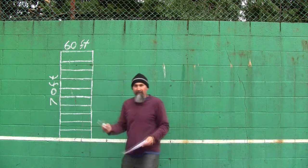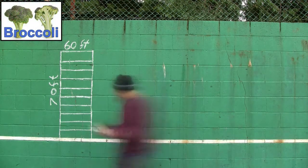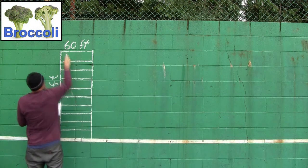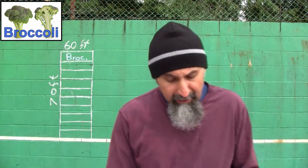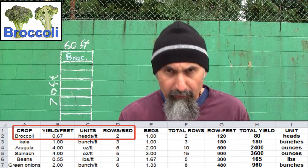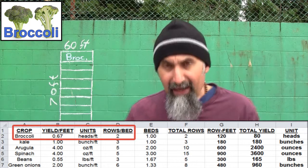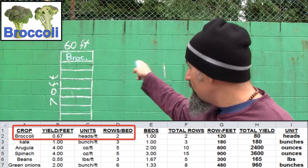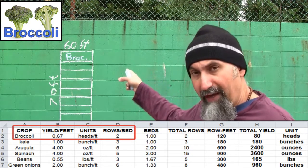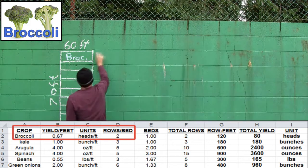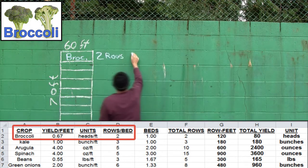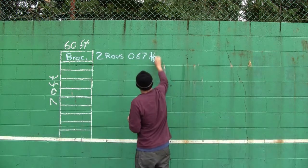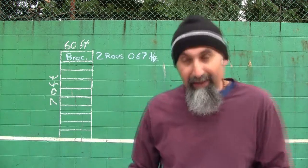In the first bed, we're going to plant broccoli. The yield for broccoli is 0.67 heads per foot, and we can put in two rows per bed. So we're going to have two rows of broccoli with a yield of 0.67 heads per foot.